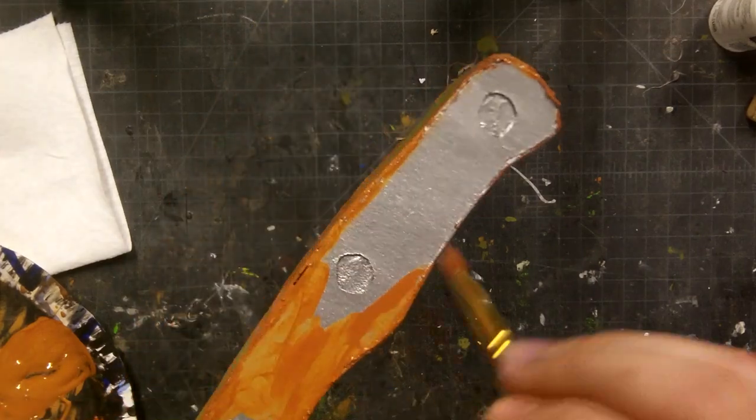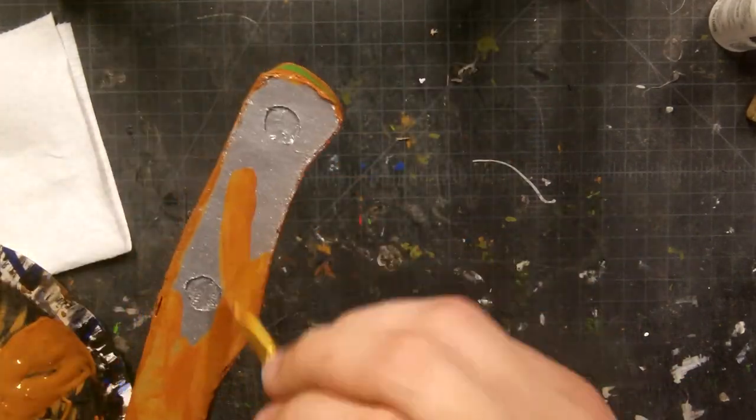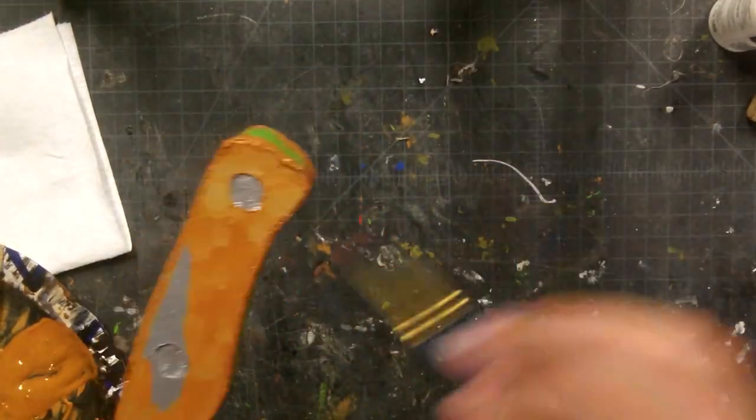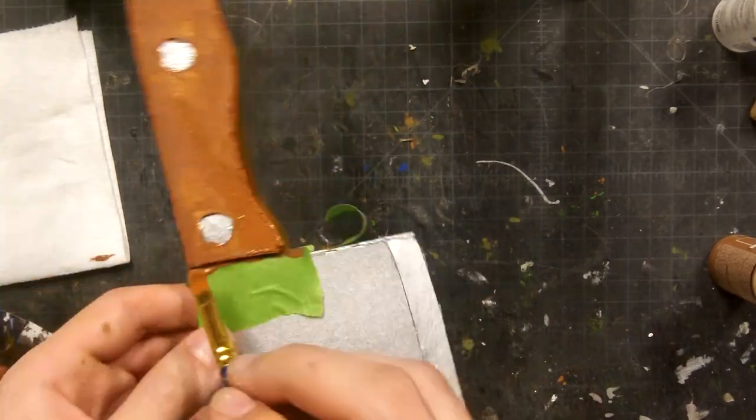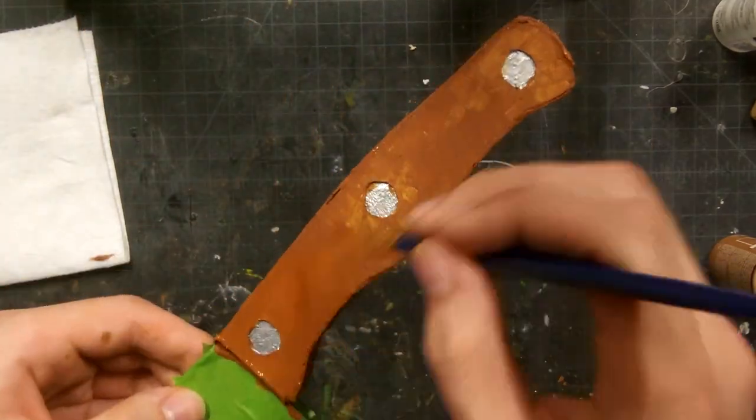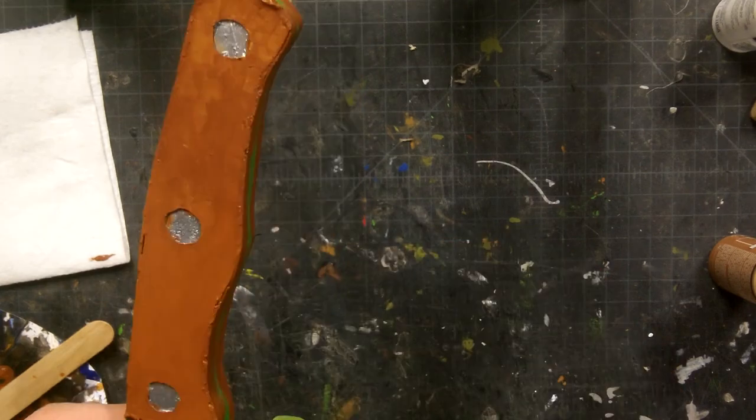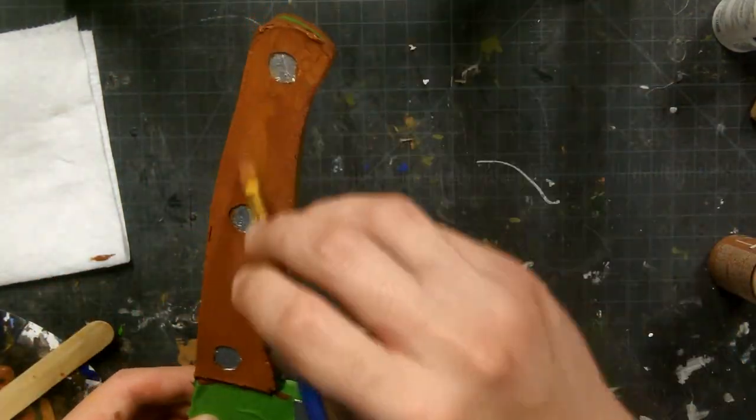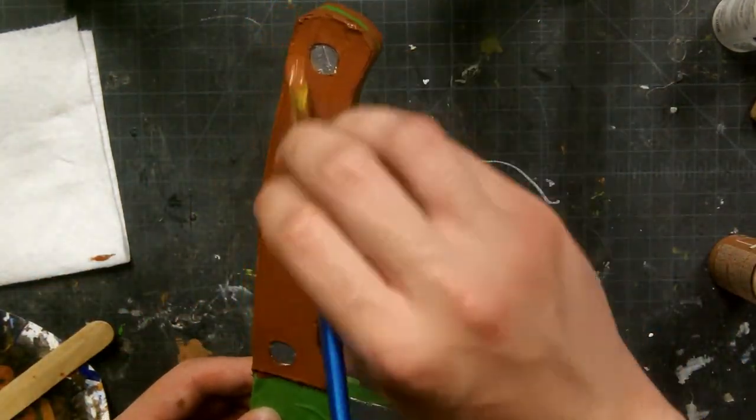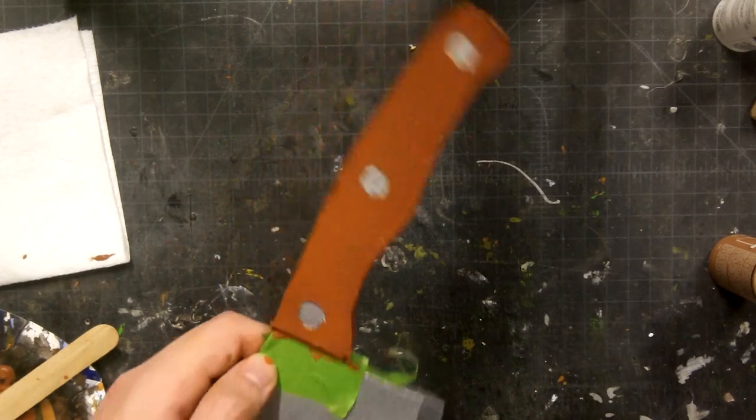Then I painted the handle with some burnt sienna acrylic paint. It did take me a few coats to get a nice color. I had to be careful around the parts I still want to be silver. I did make a few mistakes but I went back in with a silver sharpie to cover those up.